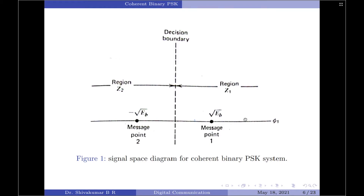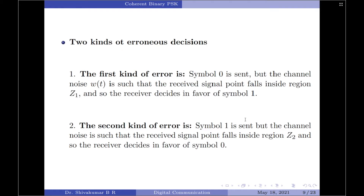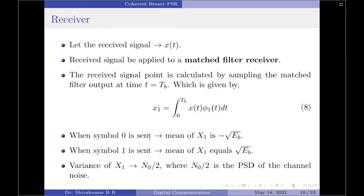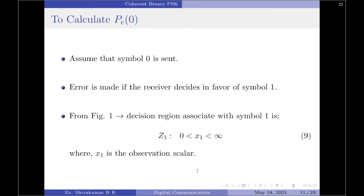The received signal point x1 is a sample value of a Gaussian distributed random variable X1. When symbol 0 is sent, the mean of X1 is −√Eb. When symbol 1 is sent, the mean of X1 is +√Eb. Regardless of which symbol was sent, the variance of X1 is always N0/2, where N0/2 is the power spectral density of the AWGN channel noise. We are now ready to calculate the probability of error of the first and second kind.